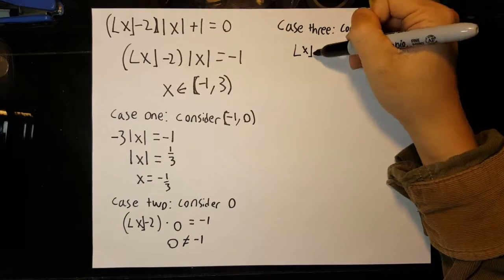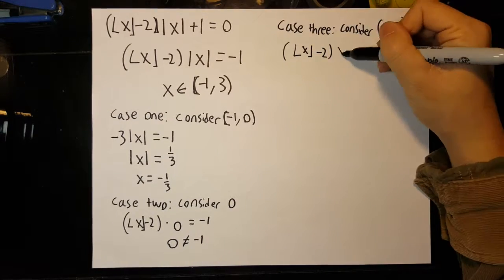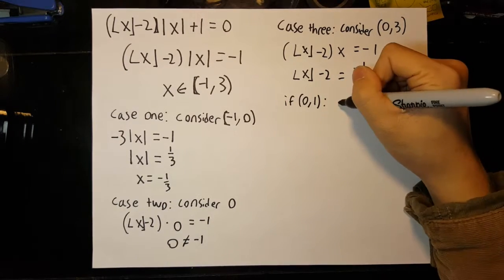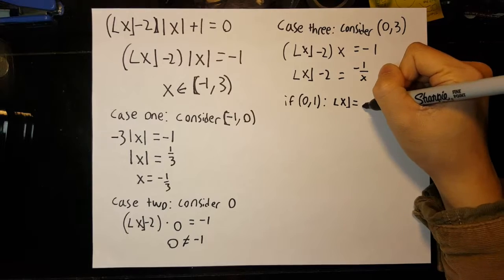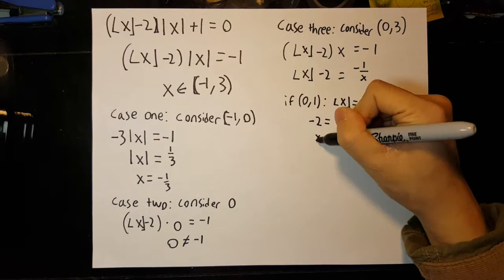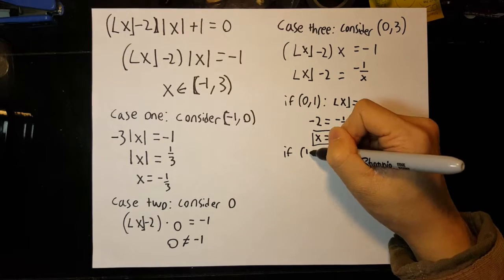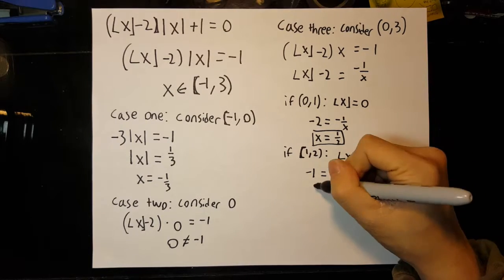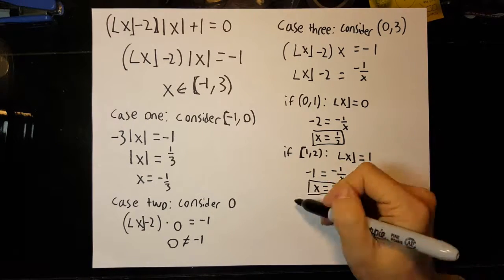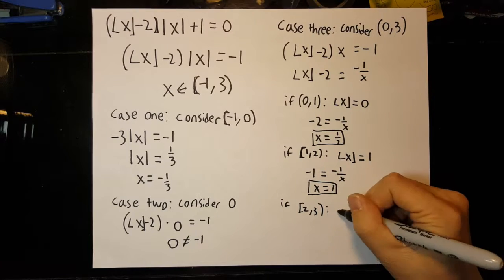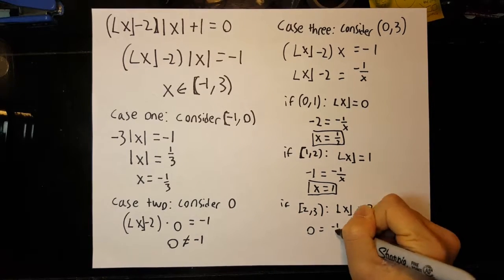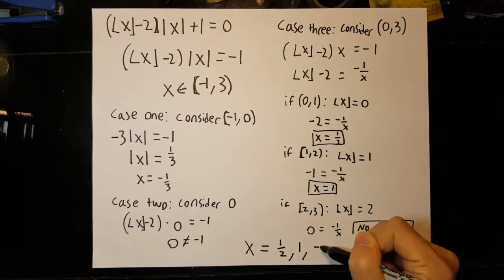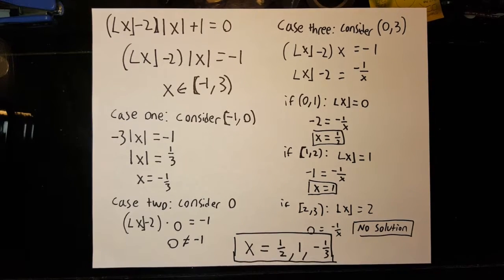If x is between zero and three, we can divide both sides by x to get the floor of x minus two equals negative one over x. From the range zero to one, the floor of x is zero, and so negative two equals negative one over x; simplifying, we get x equals one-half. From one to two, the floor of x is one, and so negative one equals negative one over x, giving x equals one. From two to three, the floor of x is two, and so zero equals negative one over x — there is no solution to this case. Therefore, we only have three solutions: negative one-third, one-half, and one.